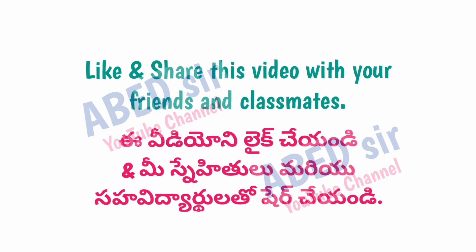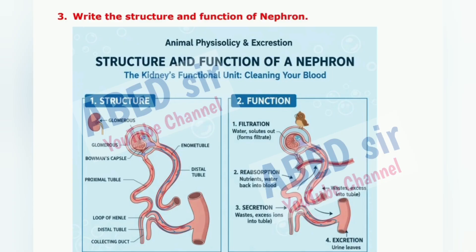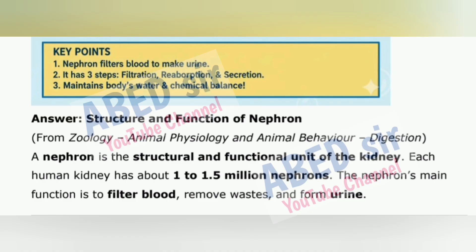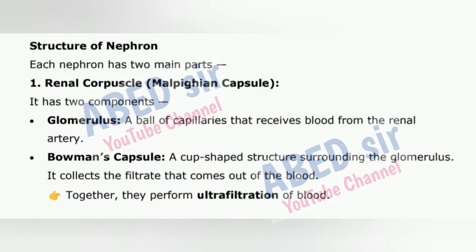Next important long question 3: Write the structure and function of the nephron. A nephron is the structural and functional unit of the kidney. Each human kidney has about 1 to 1.5 million nephrons. The nephron's main function is to filter blood, remove wastes, and form urine. Structure of the nephron — each nephron has two main parts. 1. Renal corpuscle (Malpighian capsule): it has two components — Glomerulus, a ball of capillaries that receives blood from the renal artery; and Bowman's capsule, a cup-shaped structure surrounding the glomerulus that collects the filtrate. Together, they perform ultrafiltration of blood.